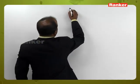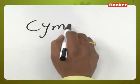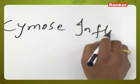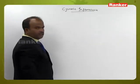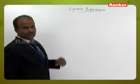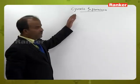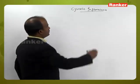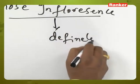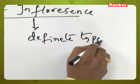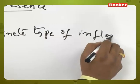Now we completed about Racemos inflorescence. We are going towards another inflorescence, that is Cymose inflorescence. Cymose inflorescence is also called as definite type of inflorescence.